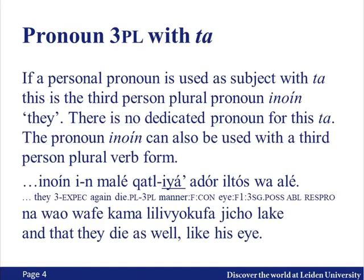It's a pro-drop language, so you don't have to use a pronoun in these clauses, but if we do use a pronoun with 'ta,' then it is the third-person plural pronoun 'they' — 'ino in.' Such a pronoun doesn't require 'ta'; it can also be used with 'e' and doesn't require a third-person masculine ending. The normal way would be with the '-iya' ending, underlined here, to mark third-person plural. The verb form 'katliya' has the '-iya' ending for third-person plural and is used in the same clause with 'ino in,' the pronoun for 'they.'